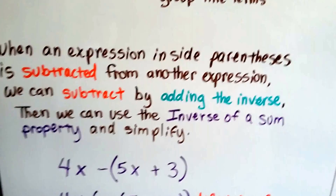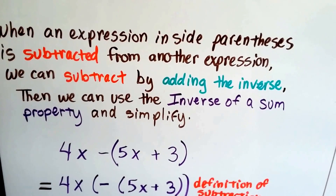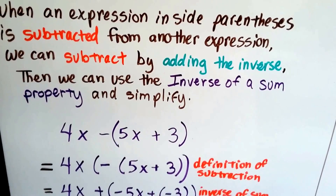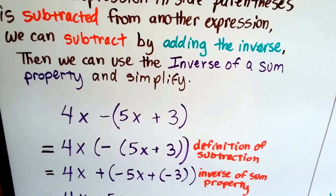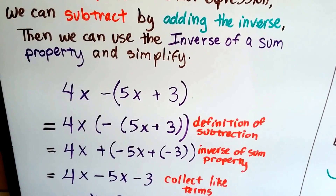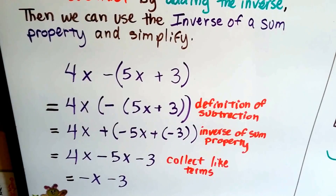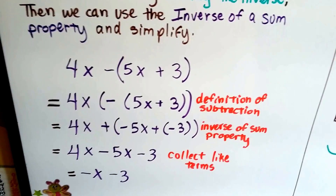When an expression inside parentheses is subtracted from another expression, we can subtract by adding the inverse. Then we can use the inverse of a sum property and simplify.